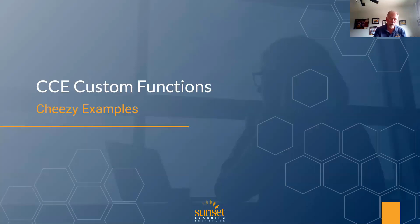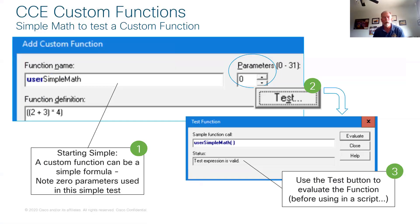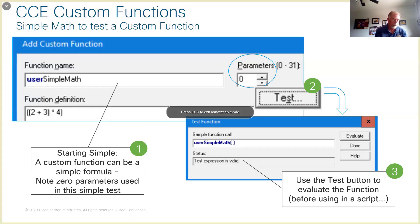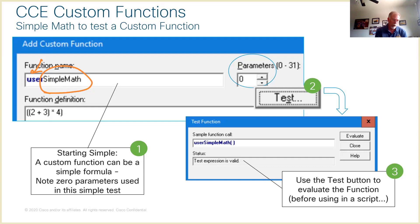Here are some examples of custom functions — they get less cheesy as we go, but we start pretty basic just to show what a custom function can be. When we add a new custom function under the Script menu, we've got to give it a name. The name must start with 'user'. We've got a custom function named 'user_simple_math'. We're doing some simple math — two plus three times four, keeping in mind the use of brackets.